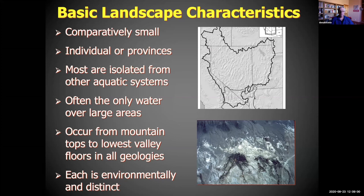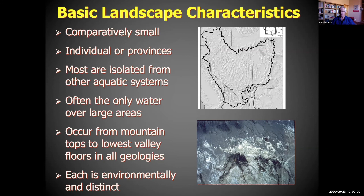All these springs are sort of small, found singular in the provinces. They're isolated from other aquatic systems, isolated for long periods of time, and not attributed to anything else — they come from the only water of the large areas. They occur from mountain tops to the lowest valley floors in all geologies. In this region there are probably 40,000 springs, and each spring is environmentally distinct by water chemistry, current velocity, aspect, elevation, temperature, EC, and all these types of things.